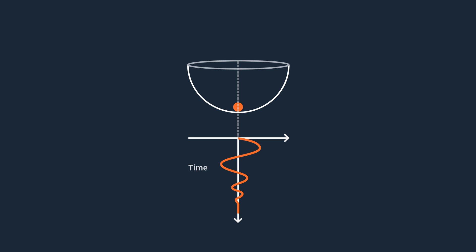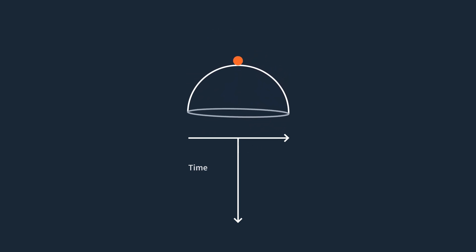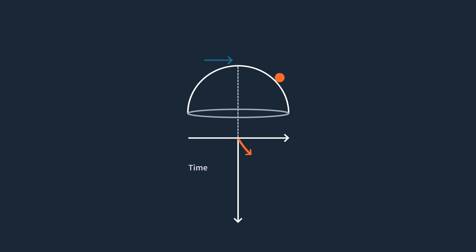This means that it is a stable system. In our second scenario, let's invert that bowl and carefully put the marble on top. A small flick will make the marble fall off the bowl and the marble will never come back to its initial position unless we manually pick it up and put it back — in this second scenario the system is obviously unstable.